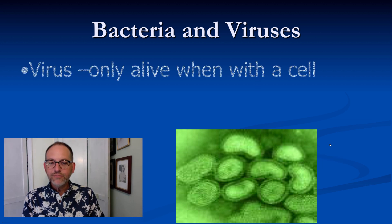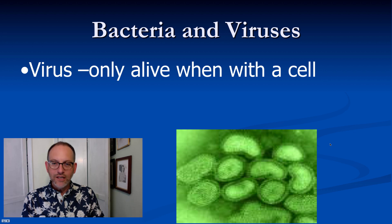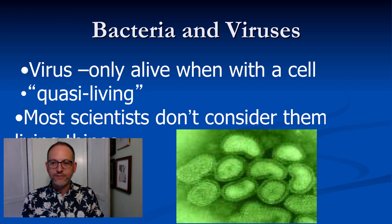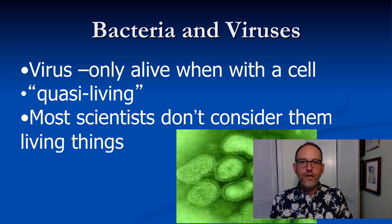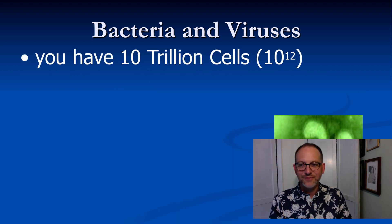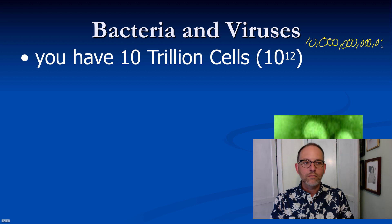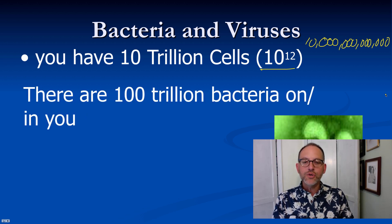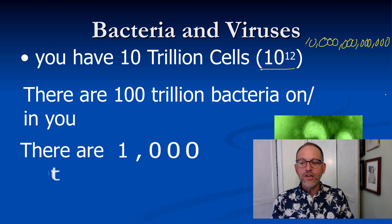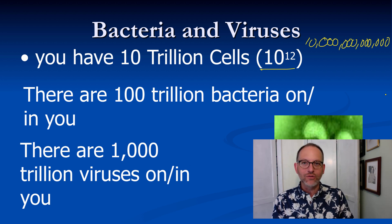Viruses can only be living when they are attached to another cell — this is called quasi-living. Most scientists agree that viruses are not considered a living thing because they don't fit all the criteria. Some astounding numbers: you have about 10 trillion cells, 100 trillion bacteria on you, and about 1,000 trillion viruses on or in you.